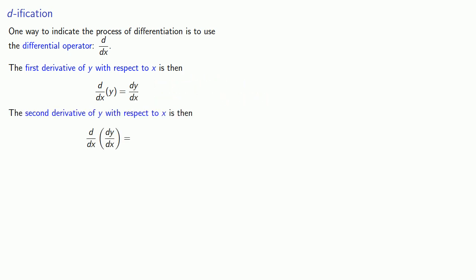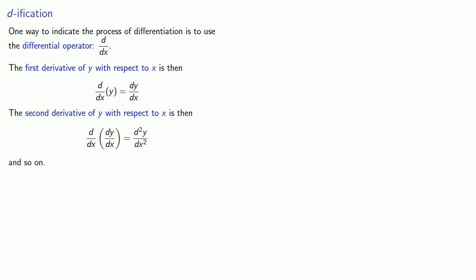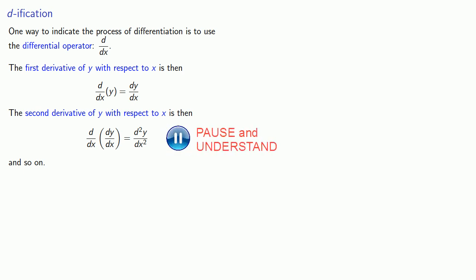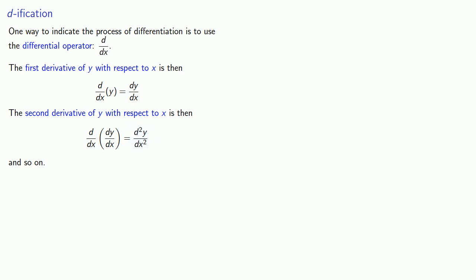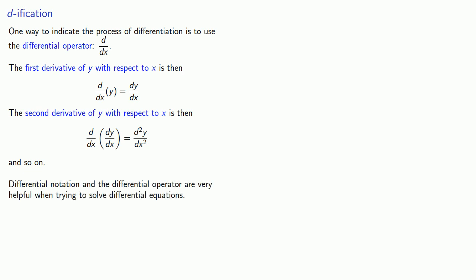The second derivative of y with respect to x is the differential operator d over dx applied to dy over dx, and that gives us d²y over dx squared. If you've ever wondered why the second derivative is written in this fashion — with d²y over dx squared — it's because of this operator notation. Differential notation and the differential operator are very helpful when trying to solve differential equations.